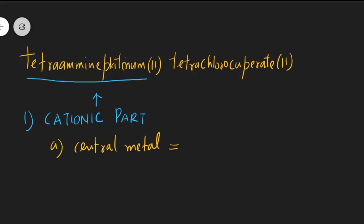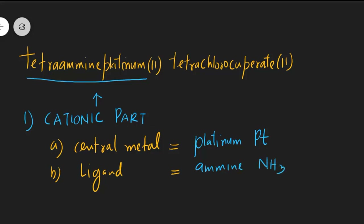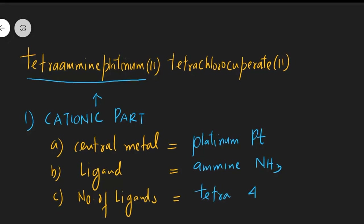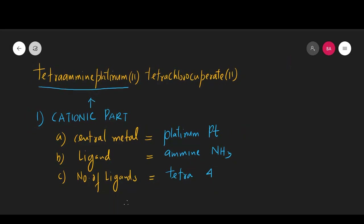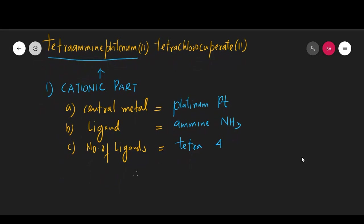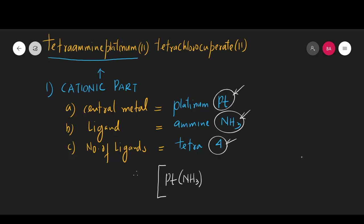In the cationic part, the central metal is platinum, symbol Pt. The ligand here is amine, and amine we know is ammonia, NH₃. The number of amine molecules — the number of ligands — is tetra, which is 4. So let's formulate this part of the complex. We put a square bracket first, followed by the central metal Pt, then the ligand ammonia kept in parenthesis with a subscript 4.